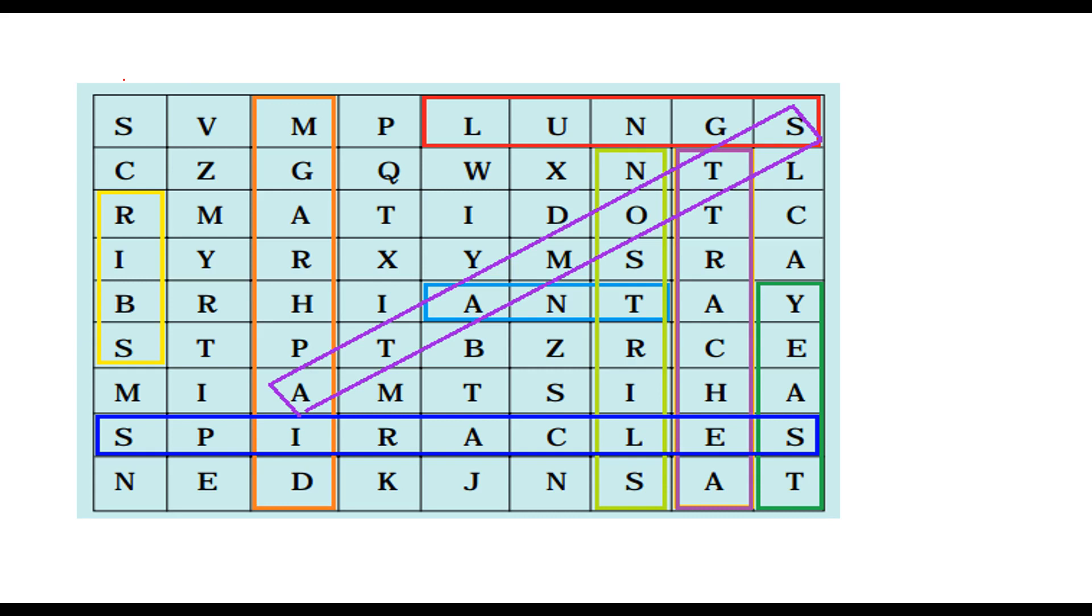This is the answer. This is the way you have to do. You have to make a block. See, this is ribs. If you choose spiracles, this is ant, like this. All we have to choose, nostril, etc.